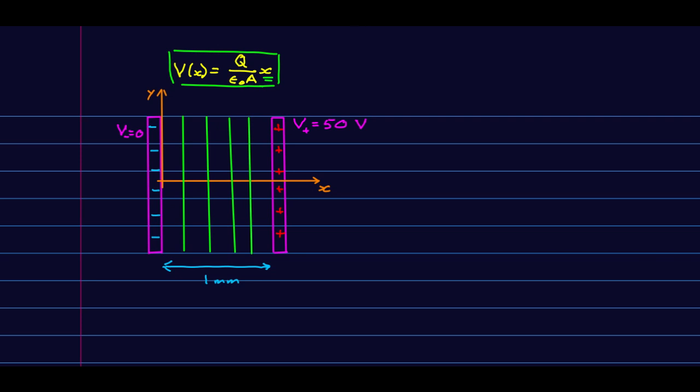These are going to be parallel lines where the potentials on these are 10 volts, 20 volts, 30 volts, 40 volts. There would be the 0 volt line right here and the 50 volt line right up against this plate.